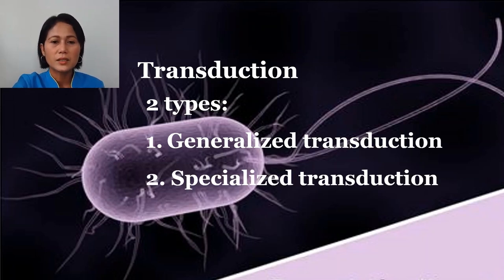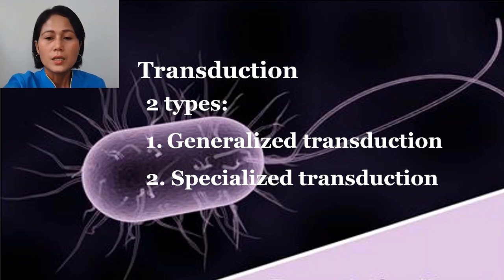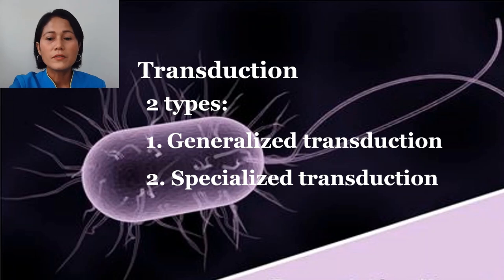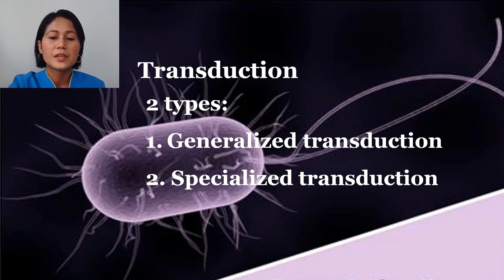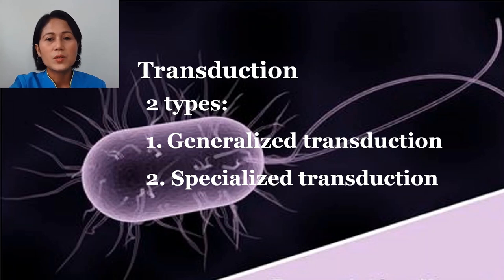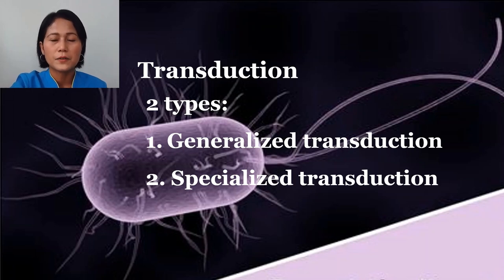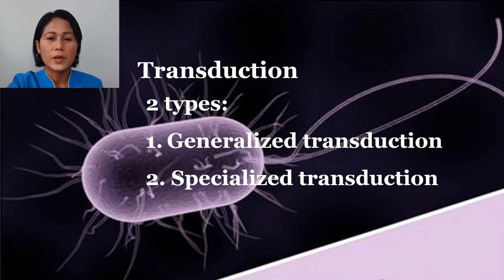The two types of transduction are generalized transduction and specialized transduction. Generalized transduction occurs during the lytic cycle of virulent and temperate phages and can transfer any part of the bacterial genome — meaning there is no selective transfer. Recombination occurs between genetic materials from two cells without selective transfer. In specialized transduction, transducing particles carry only a specific portion of a bacterial genome and selective transfer occurs. The key difference is that generalized transduction has no selective transfer, while specialized transduction does.